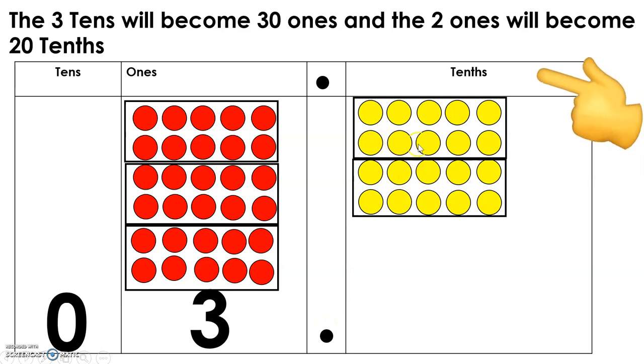Then we will have to copy that decimal point here and put it here. Again, we will count how many groups of tens are here. One, two. So basically, we will have to place the number two. Therefore, the answer of 32 divided by 10 is 3.2.